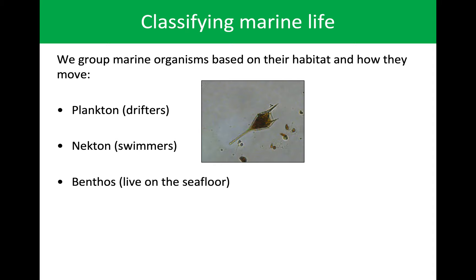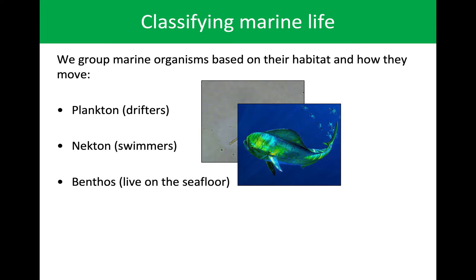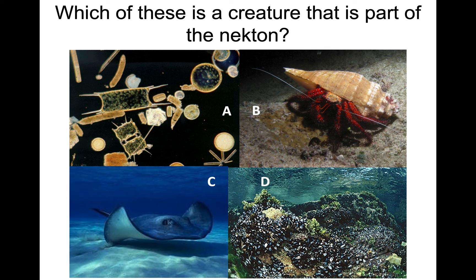Here are a few images. An example of plankton is a Ceratium — I actually took this picture. This is Ceratium furca, a species we find off the coast here in California. If we're thinking about nekton, here's a dorado we also have off the coast. And then benthos, as I said, is going to be a lobster and things like that.